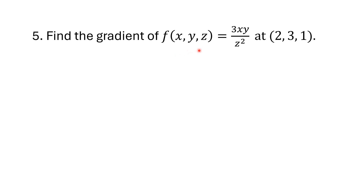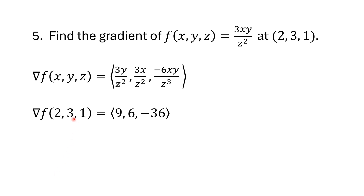Find the gradient of f(x, y, z) = 3xy/z². It helps to think of z² as z^(−2). With respect to x we get 3y/z². With respect to y we get 3x/z². With respect to z we get −2 times 3xy·z^(−3), which is −6xyz^(−3). Plugging our values in, we get [9, 6, −36].